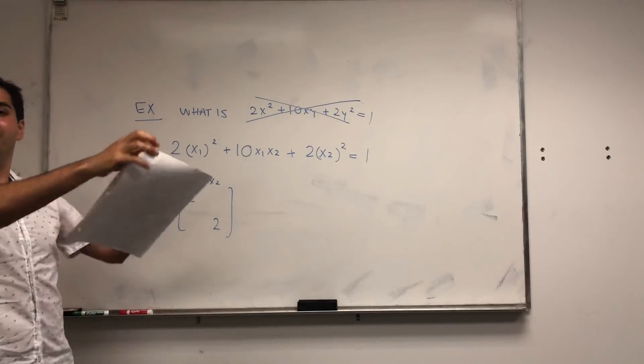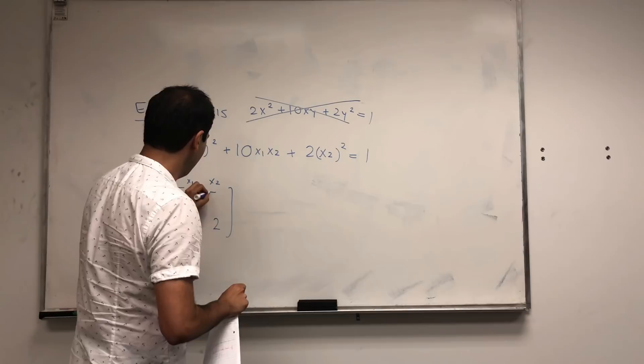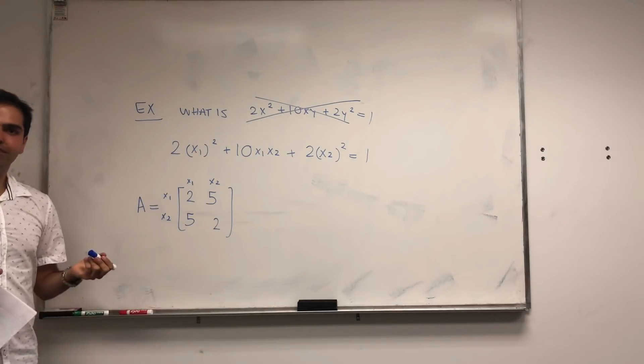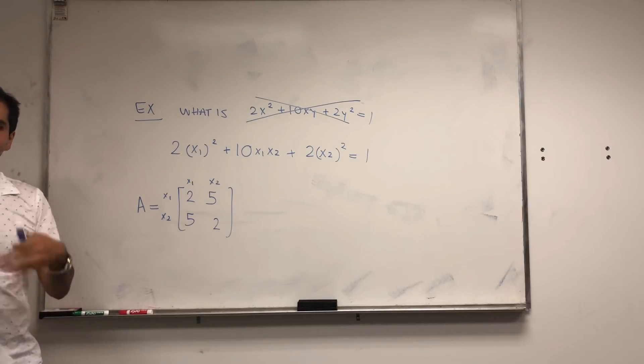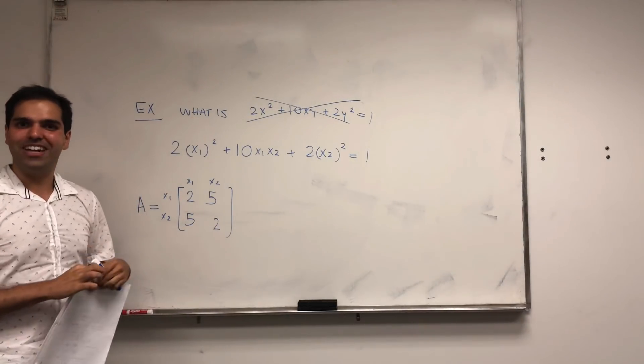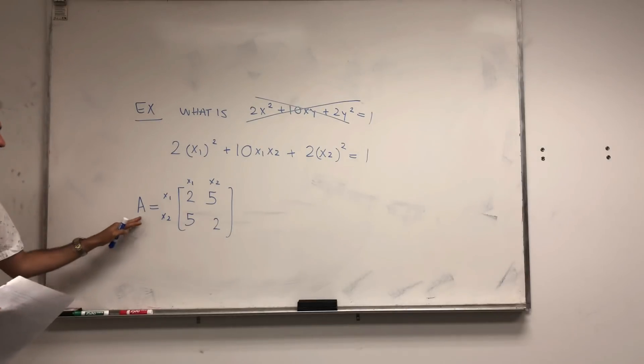But because you want everything to balance out, the way you do this, you distribute them equally in the two slots. So it's 2, 5, 5, 2. The linear algebra reason of this is you want a symmetric matrix, because we'll see that for symmetric matrices, you can do more things than you can for regular matrices.